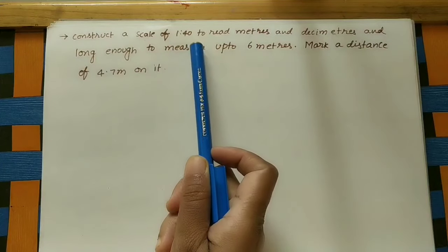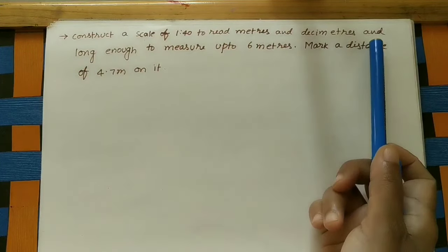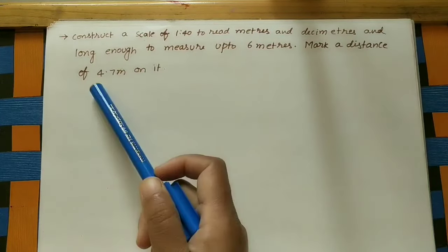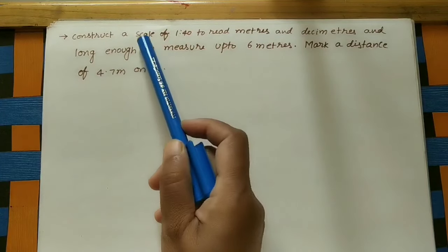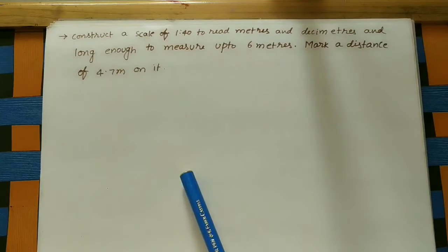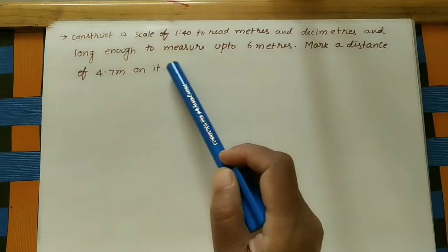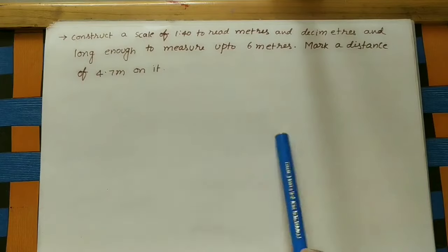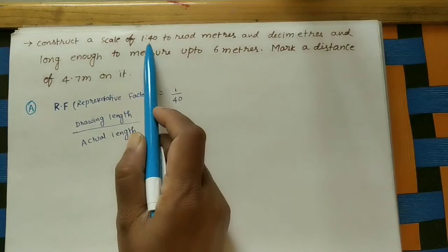The given problem: construct a scale of 1 is to 40 to read meters and decimeters, long enough to measure up to 6 meters, and mark a distance of 4.7 meters on it. We have to construct the scale, measure meters and decimeters, and measure up to six meters using that scale.